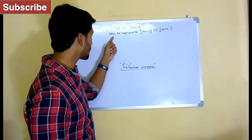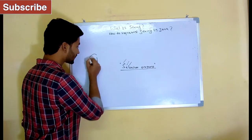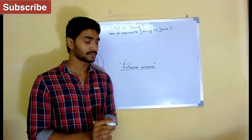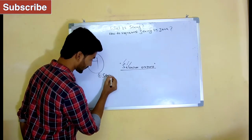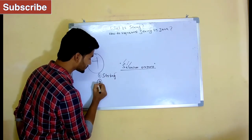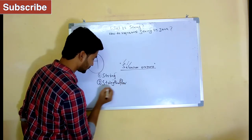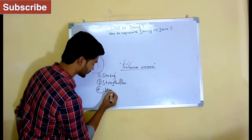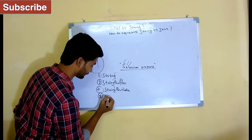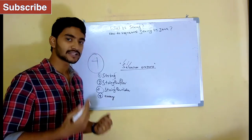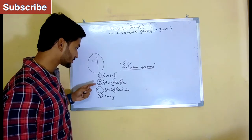So my next question is: how to represent string in Java? There are four different ways by which you can represent strings in Java. The first one is String, the second one is StringBuffer, the third one is StringBuilder, and the fourth one is array.